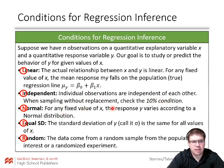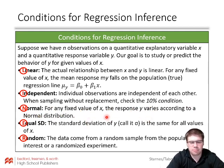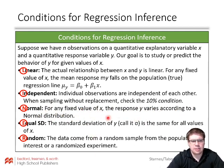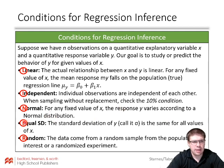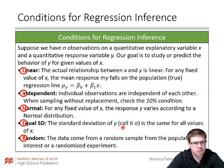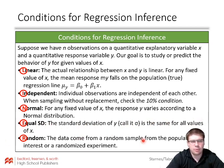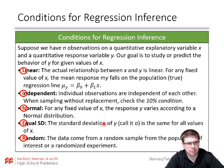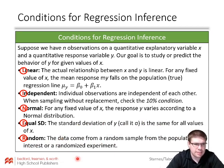Normal: for any fixed value of x, the response y varies according to a normal distribution. We'll look at a histogram, dot plot, or box-and-whisker plot of our residuals to verify they follow a normal distribution. Equal standard deviation: sigma is the same for all values of x — when we look at our residual plot, we want to see spread evenly throughout. Random: the data come from a random sample from the population of interest or a randomized experiment.